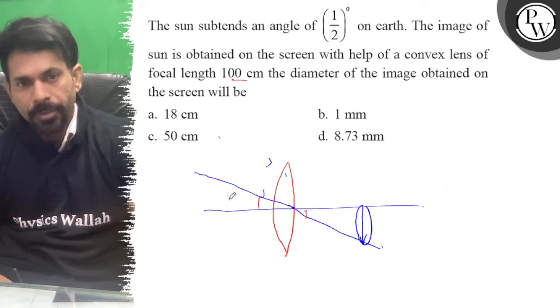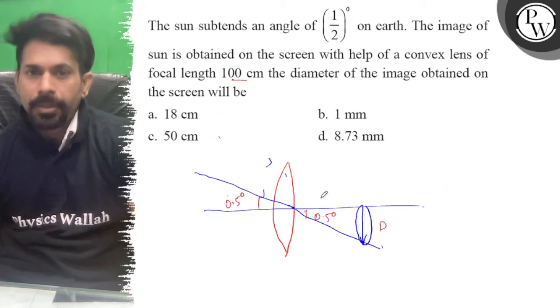This triangle, the angle is given to us as 1/2 degree, 0.5 degree. So this is 0.5 degree, this is diameter and this is focus.